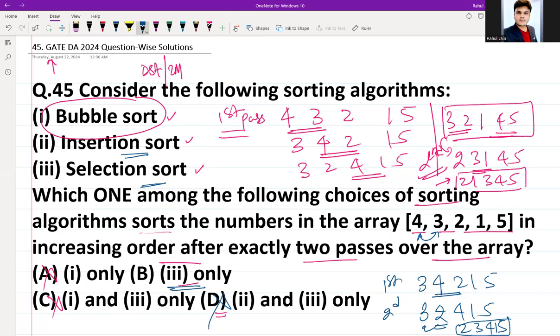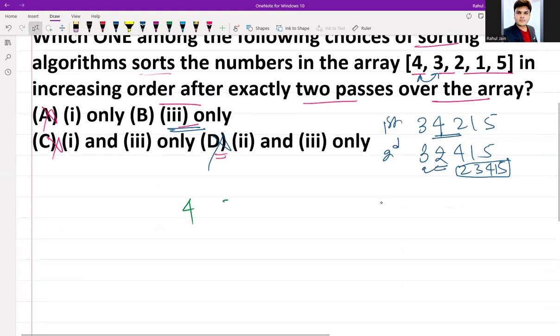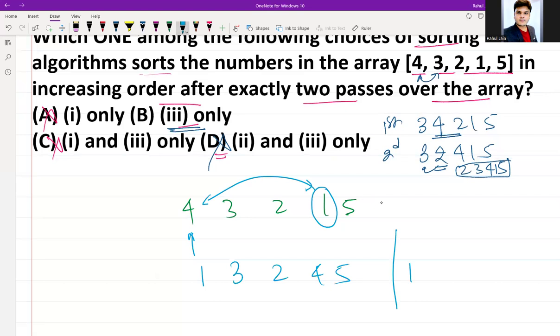So how selection sort will do? We are having array 4, 3, 2, 1, 5. So selection sort does what? It selects the minimum one. So in this the minimum one is 1. So it is minimum and at the first index it will be replaced. It will be swapped. So after first pass the output would look like 1, 3, 2, 4, 5. This is my output after first pass.